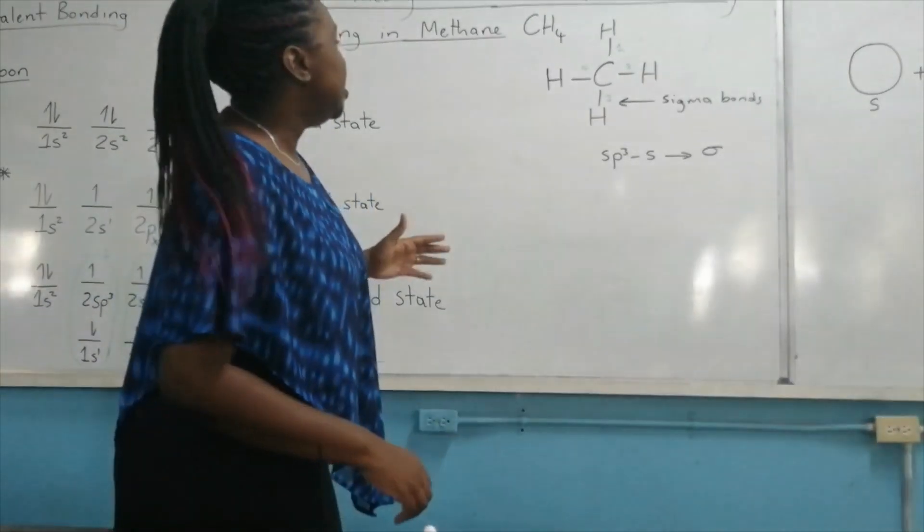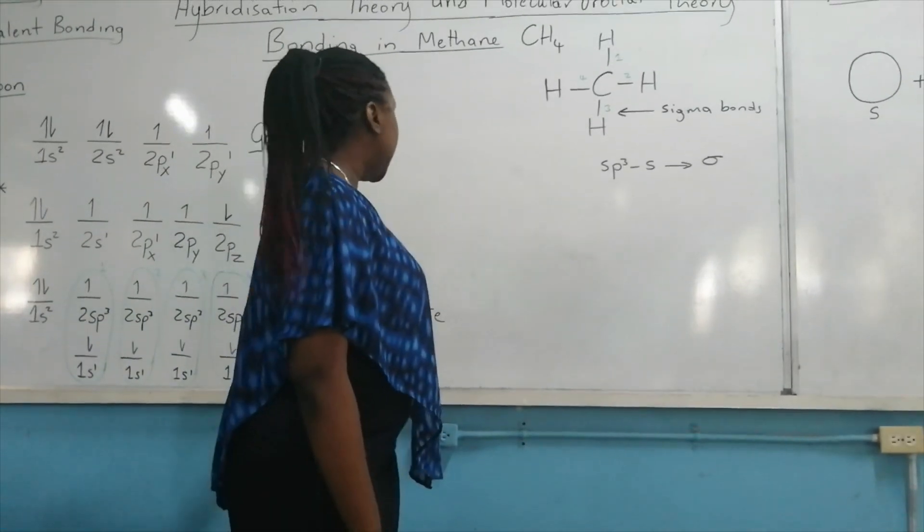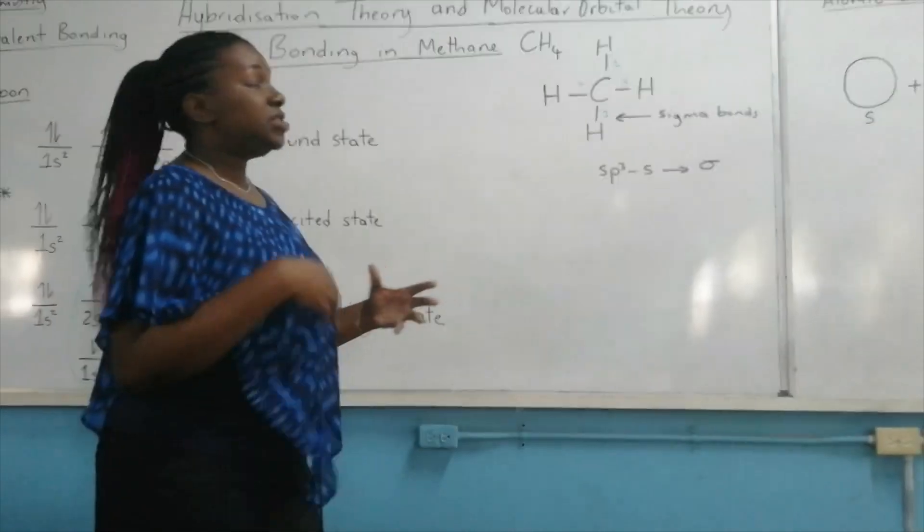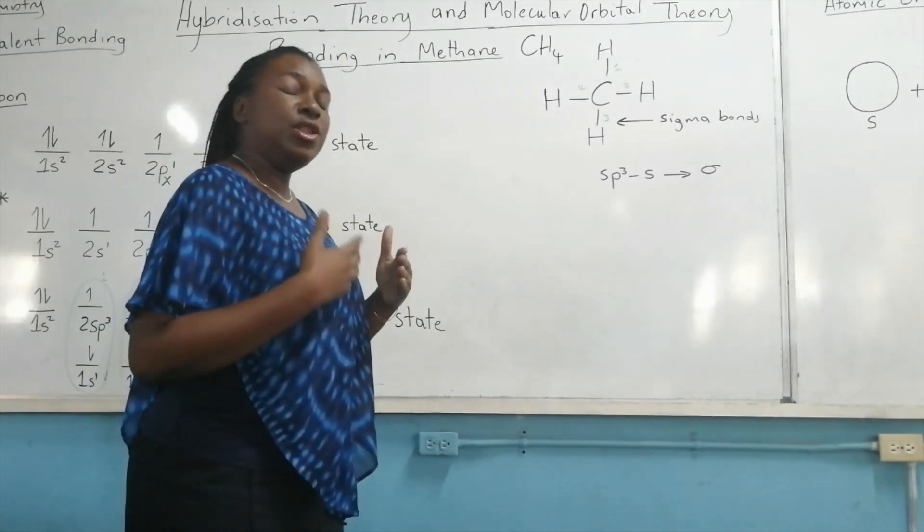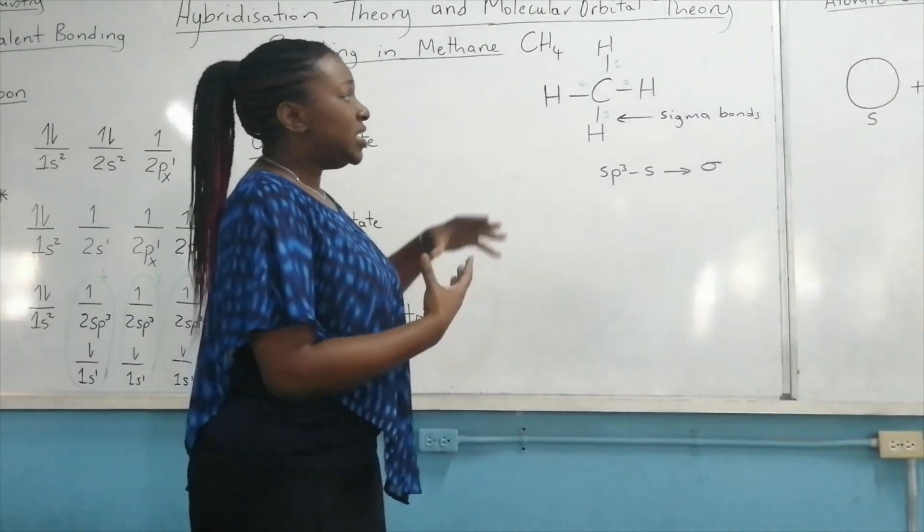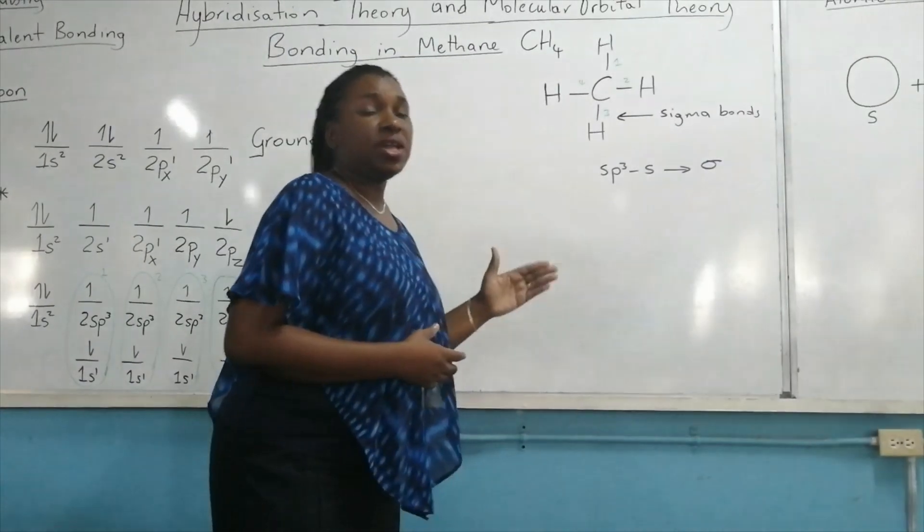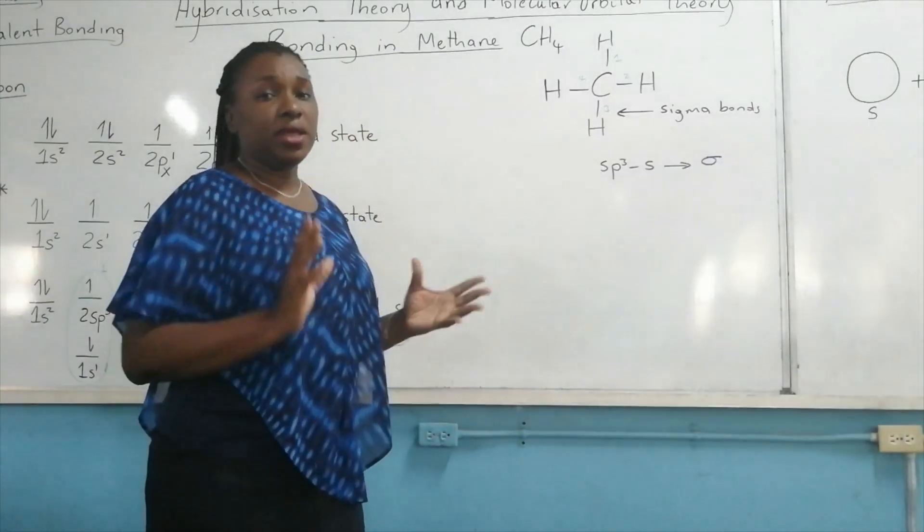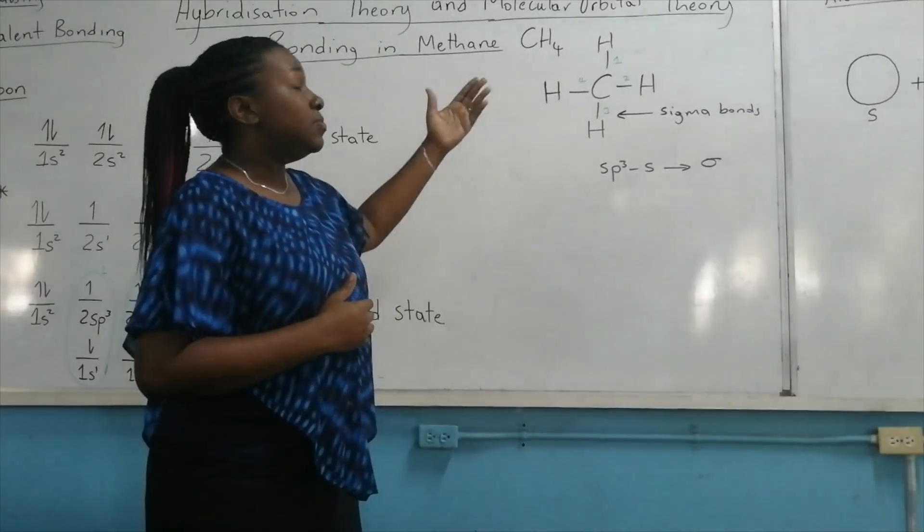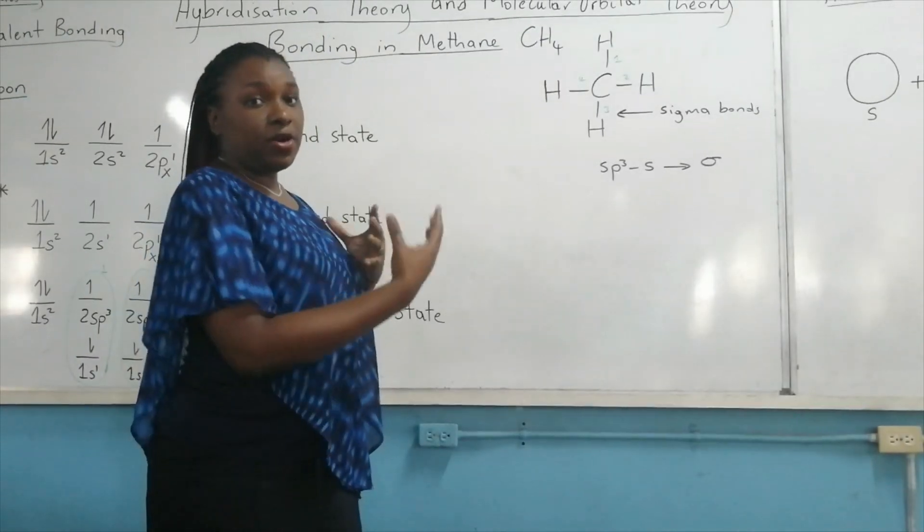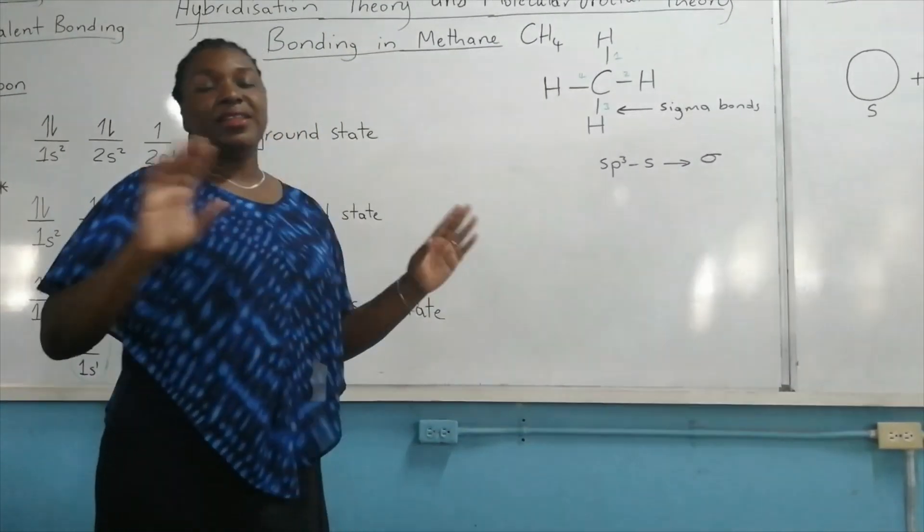So that is it in terms of the bonding, using the hybridization theory, where the atomic orbitals were merged to create new atomic orbitals. And when these atomic orbitals overlap with the hydrogen atomic orbitals, we created bonding orbitals to form this molecule. So that is it for now.